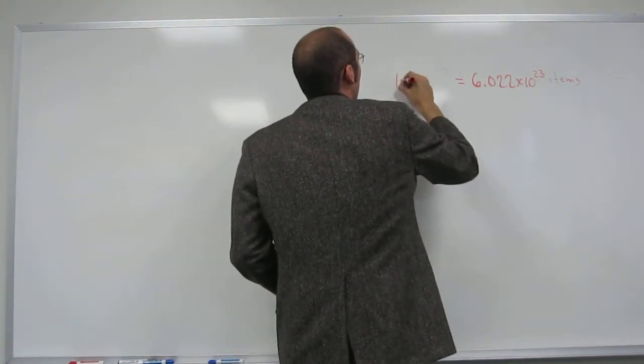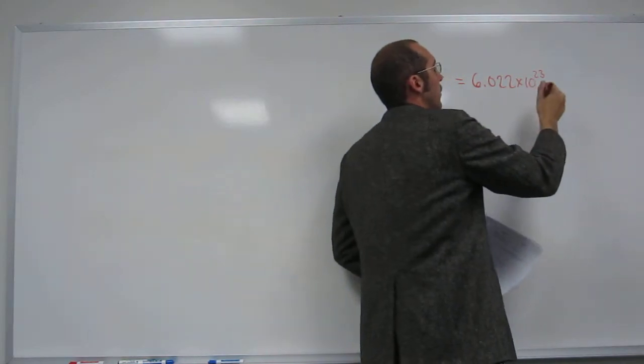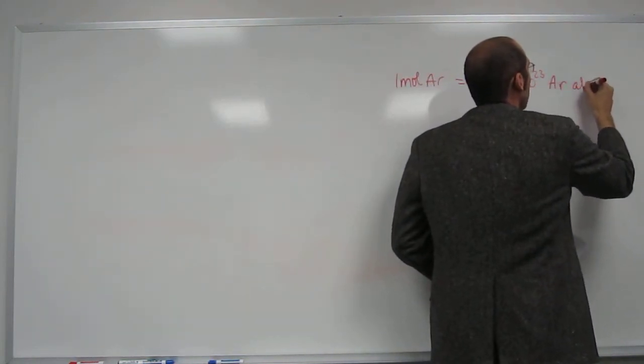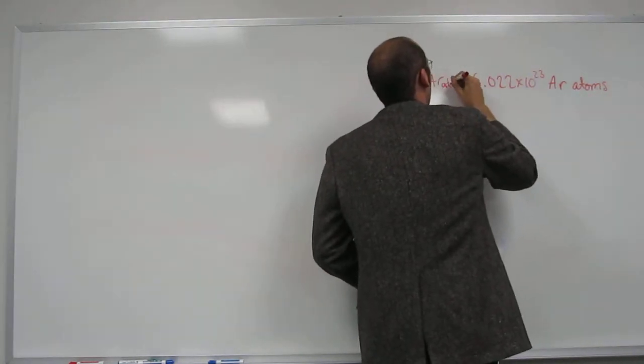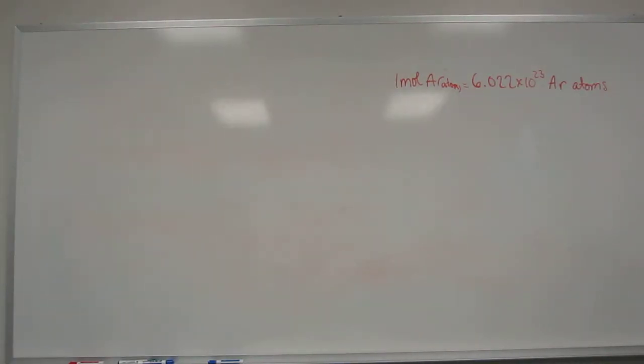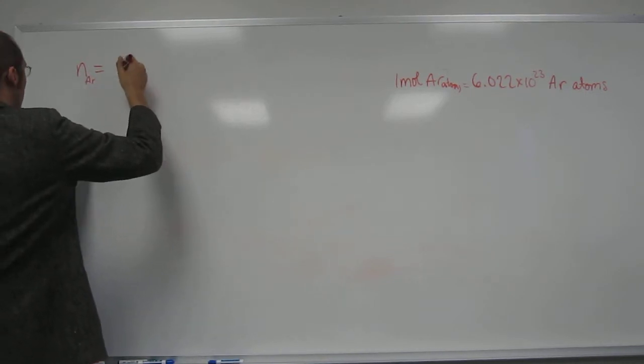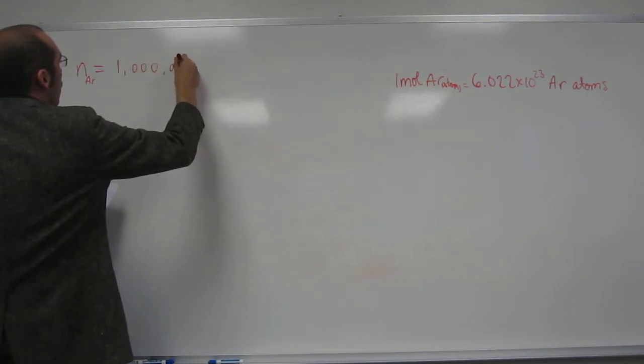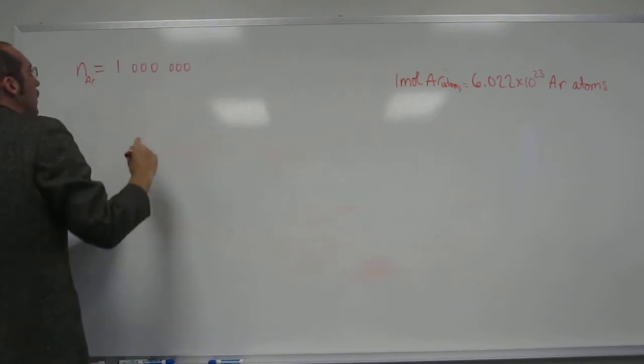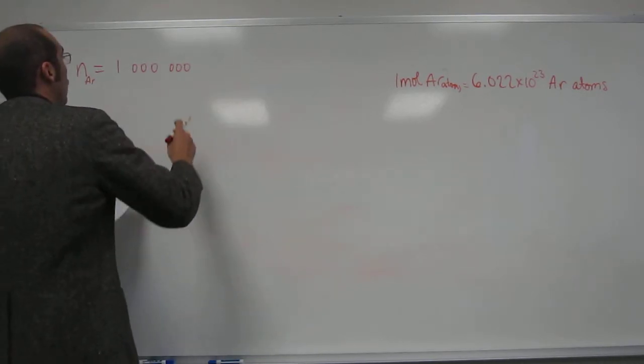In this case since we're talking about argon atoms, what we really should write is one mole of argon atoms equals 6.022 times 10 to the 23rd argon atoms. Does that make sense? We know one million argon atoms is the number that we have. So the number we have of argon atoms is 1,000,000. I guess they want this to two sig figs.